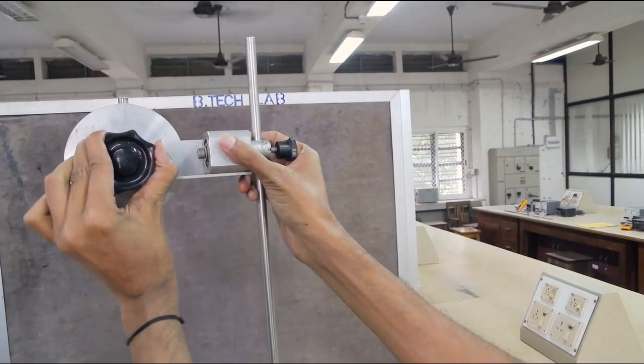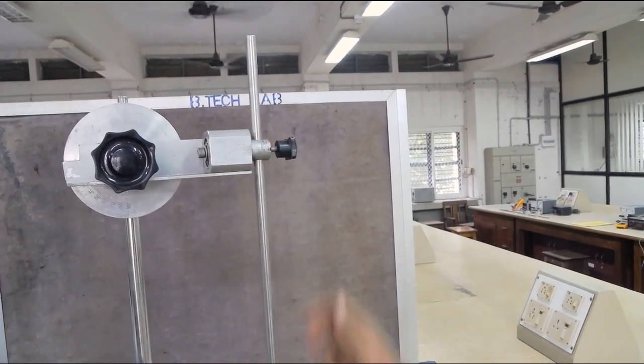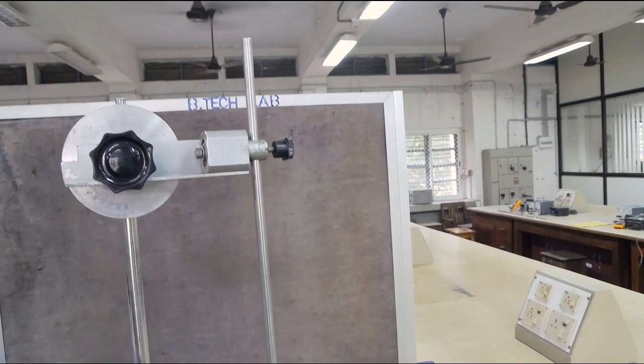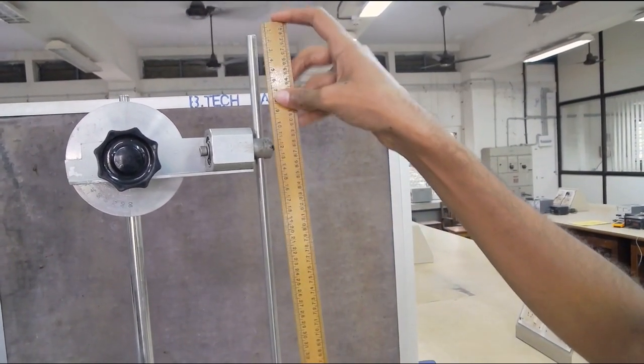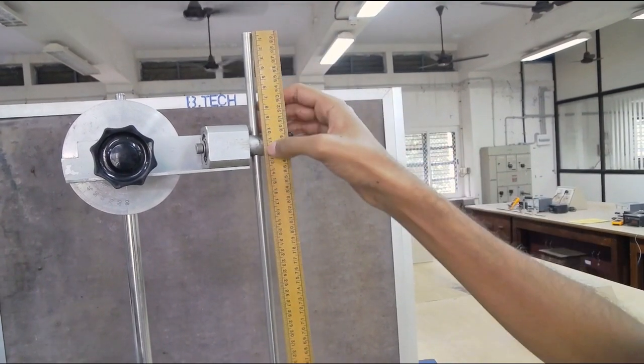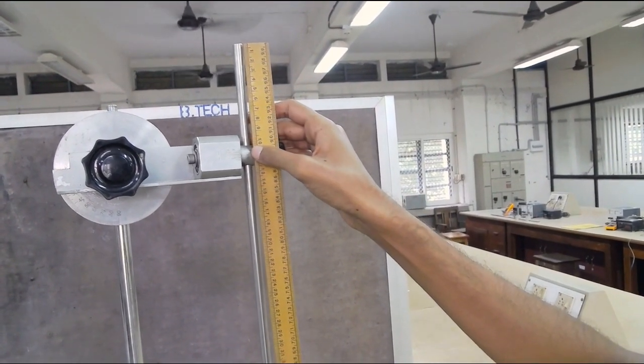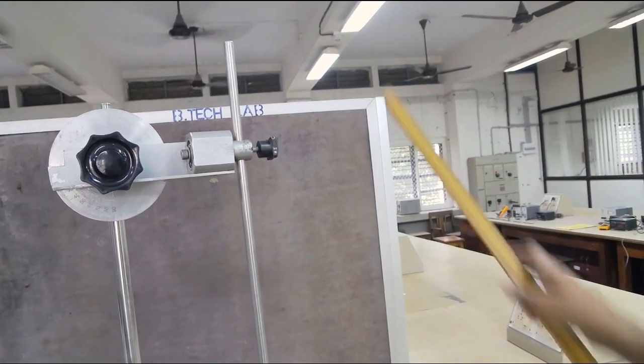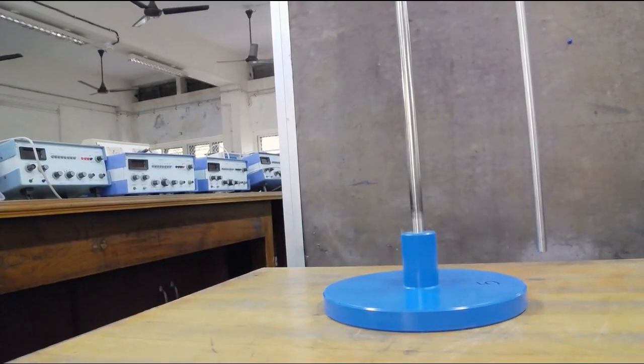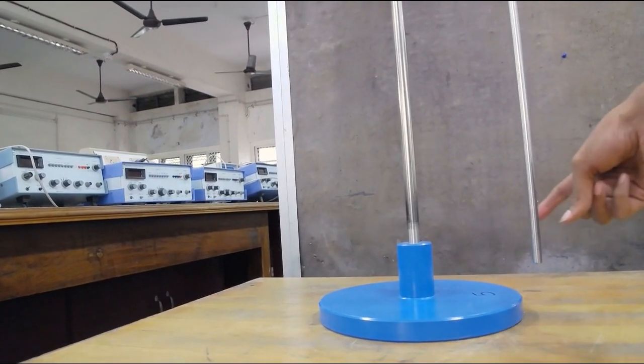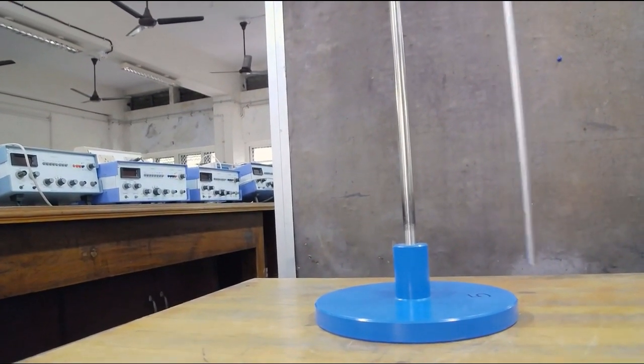In the first part of our experiment we change the length of pendulum and find corresponding time periods. So fix the rod at a particular length close to either one of the ends and measure the length between one end and the attached point. Then oscillate the pendulum in small angles and measure the time taken for 10 oscillations using a stopwatch.